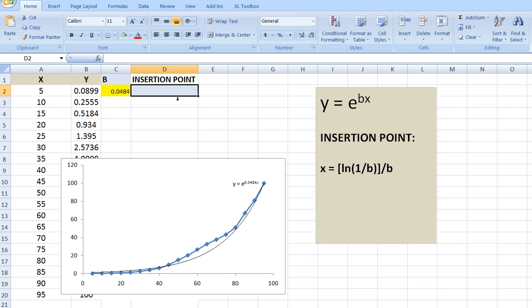The insertion point is the natural logarithm of 1 divided by b, divided again by b. So, 62 - right around here. That's our insertion point, solved.